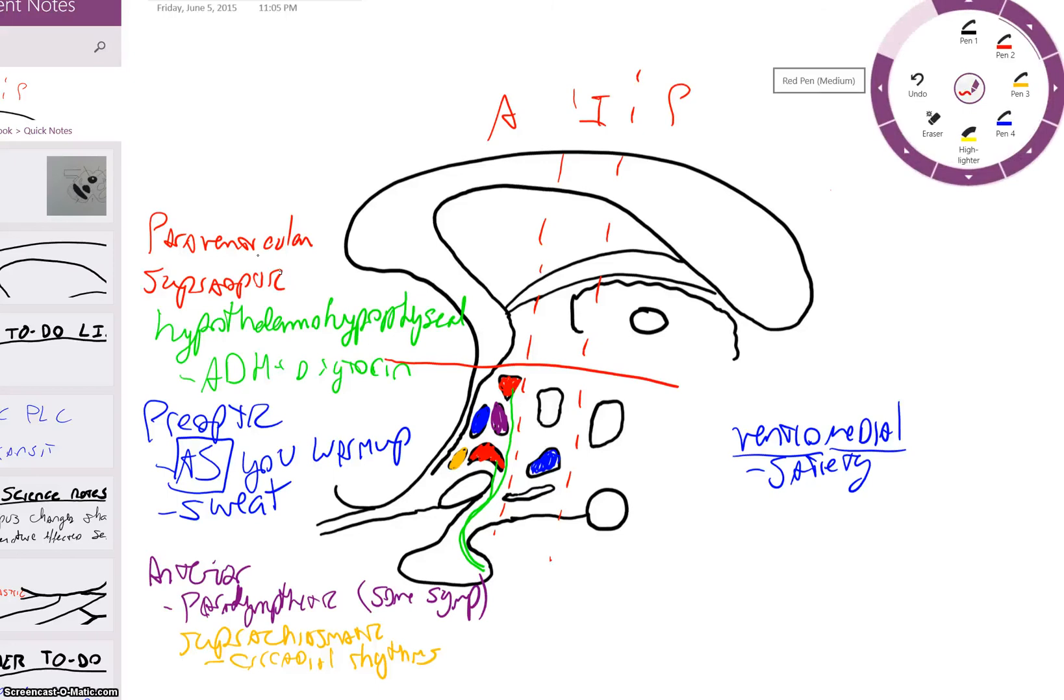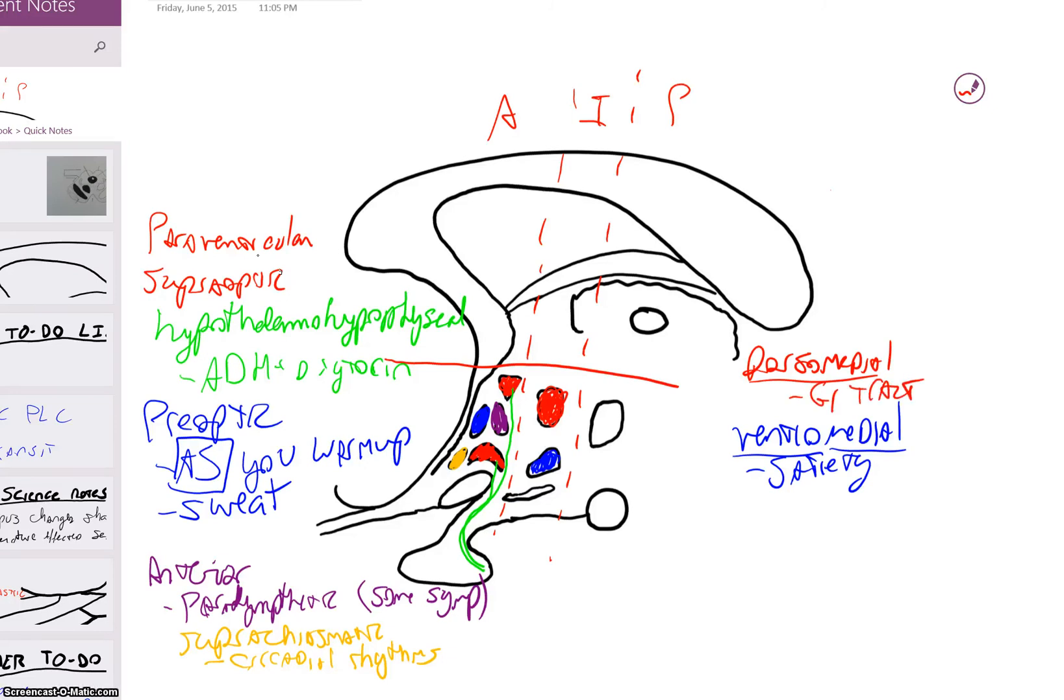Just above that, we have the dorsal medial nucleus. Dorsal fin on a fish is on its back, but fish always swim with their dorsal fin facing up. So if you forget which is which, just remember dorsal on the back, but on top. So dorsal medial, because it's also in this medial division. And we need to remember that it deals with GI tract parasympathetic functions. So I would assume that's talking about peristalsis and that sort of thing, but I don't know for sure. I don't know how much detail he's going to go into with that one.